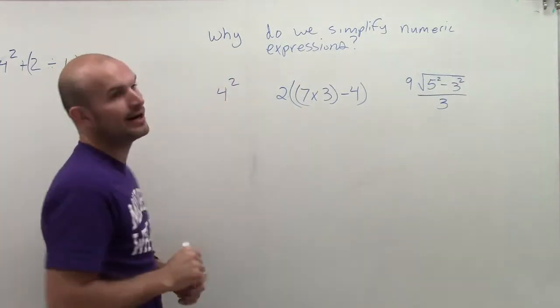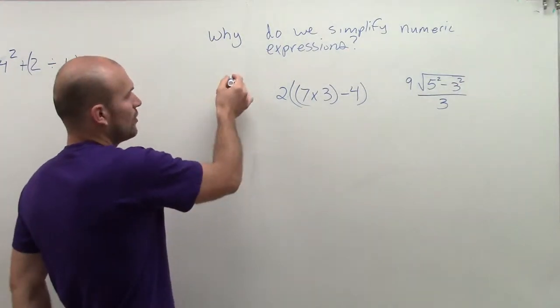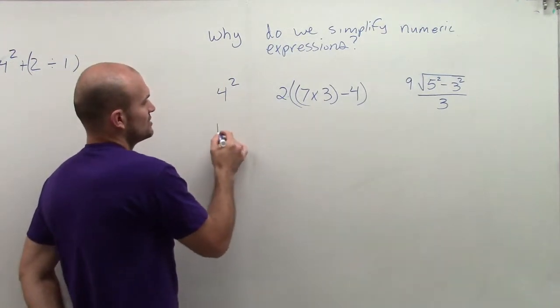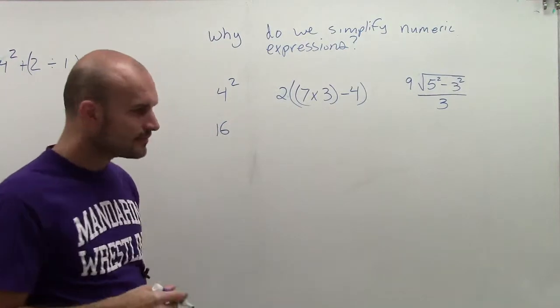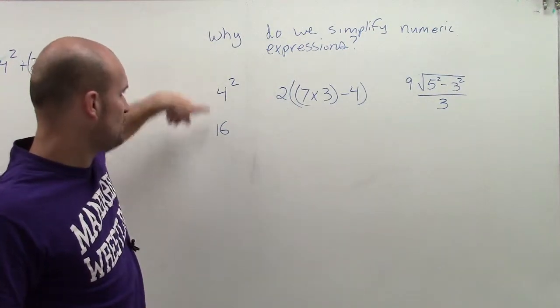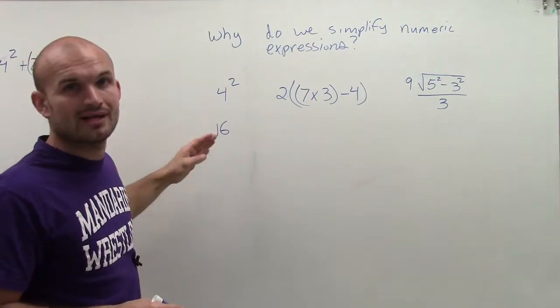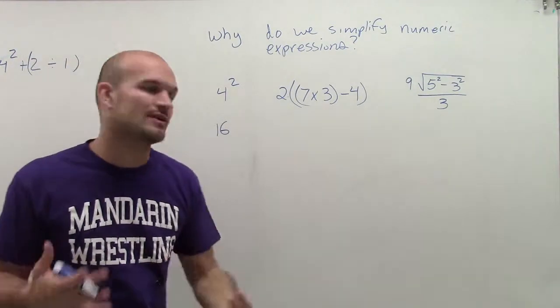So 4 squared, or 4 raised to the second power, is 4 times 4, which is 16. 16 is much simpler than 4 squared. It's one number, right? It's much easier for us to move or to do anything else with.